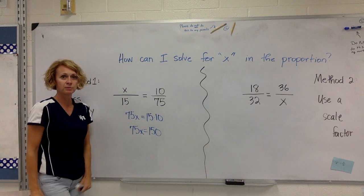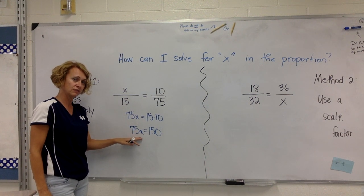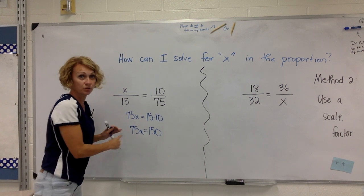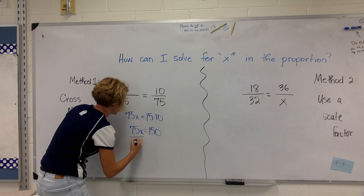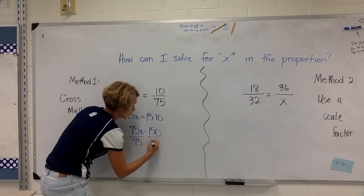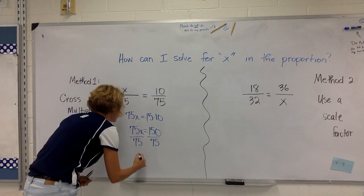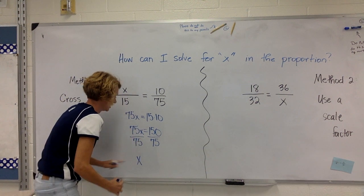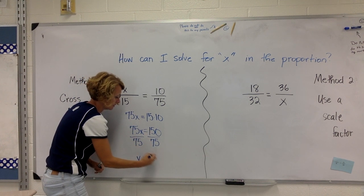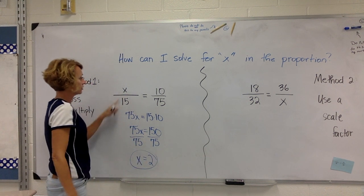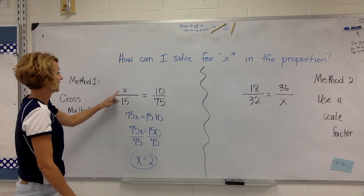This is a one-step equation. This is a multiplication statement right here of the 75 times x. Let's get rid of that multiplication by using the inverse and let's divide, because remember what we want to do is to isolate our equation for x. All right, so 75 divided by 75 is 1x and I just leave that as x. 150 divided by 75 is 2. So I know that my value right here for x must be 2 and I can check it.